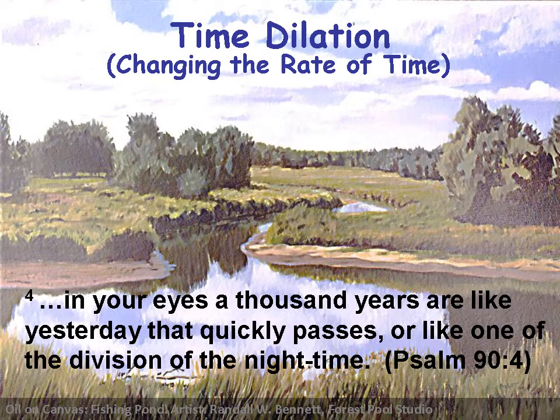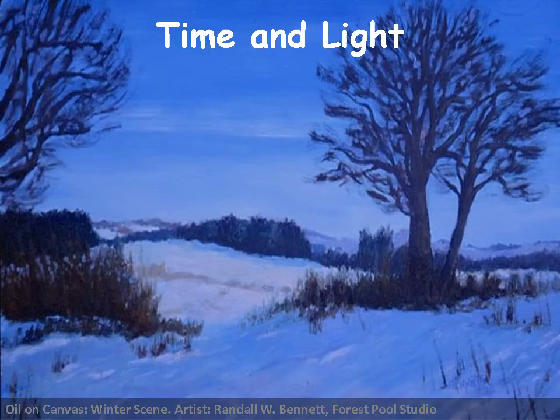Scripture tells us that God doesn't experience time the same way we do — 'a thousand years are like yesterday that quickly passes, or like one division of the night.' When I interpret Genesis with people, I like to ask: what rate of time is God moving at? Because everything in the universe, from a time dilation standpoint, moves at a different rate of time. What is the rate of time for God in eternity? It's kind of a nonsense question because God is different from us, but it does make us think — if God is the observer of a day, how long is that day?